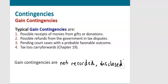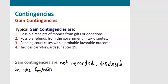But gain contingencies are disclosed in the footnotes — we give investors some information about them in the footnotes to the financial statements — only on one condition: only if the probability of actually receiving that cash in the future is high.